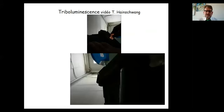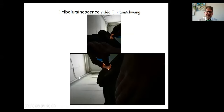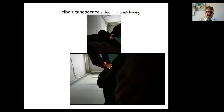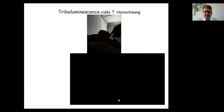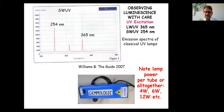An example of tribuluminescence is provided: silica glass being cut by rubbing emits orange light during the rubbing, which stops instantly once rubbing ceases.